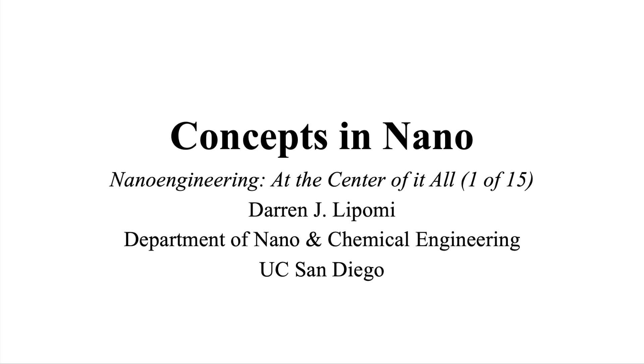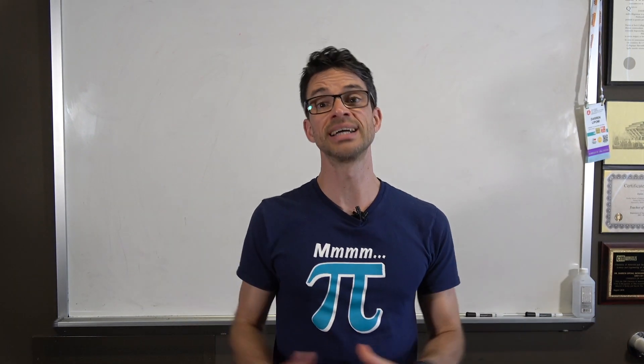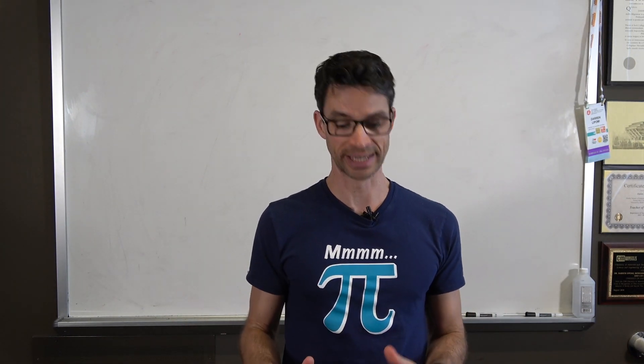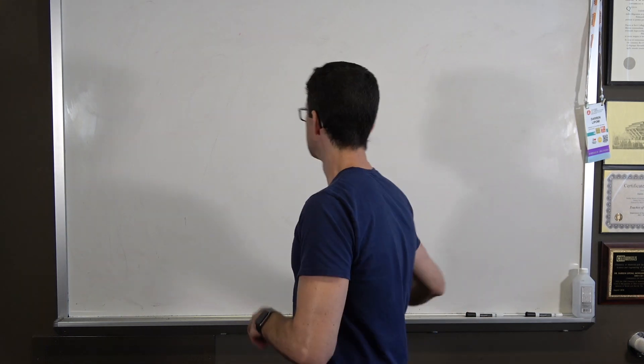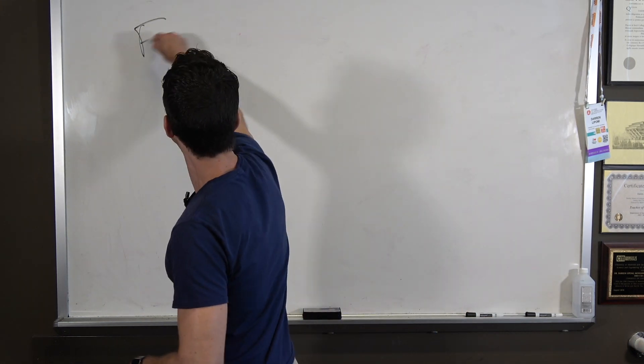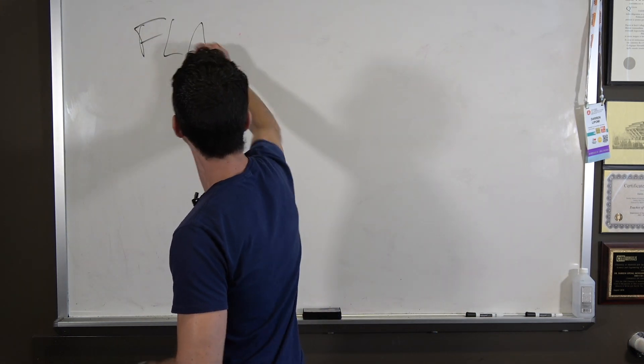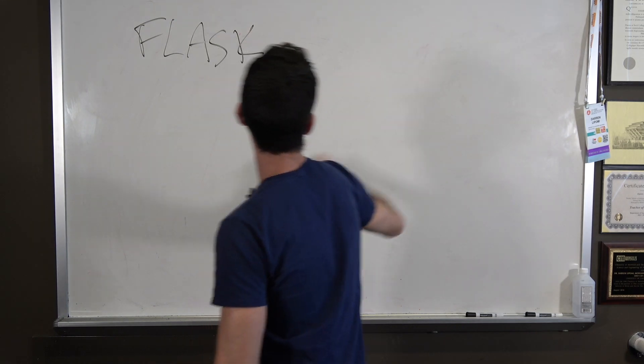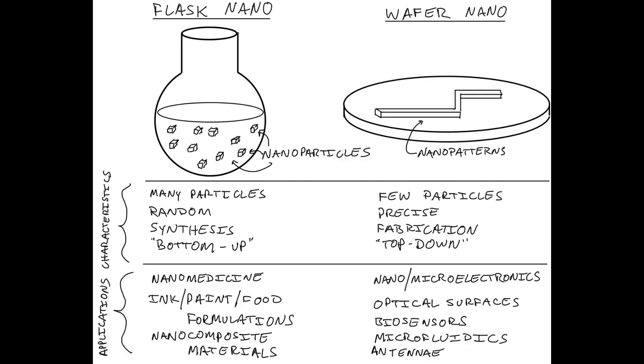Nanoengineering is the exploitation of structures and phenomena that occur on the size scale of roughly 100 nanometers or less. There are two kinds of nanoengineering: flask nano and wafer nano.